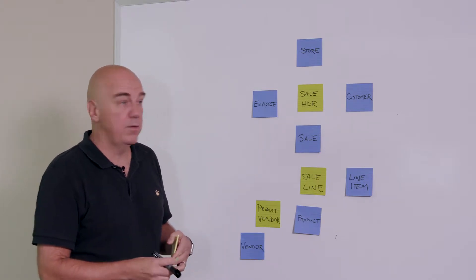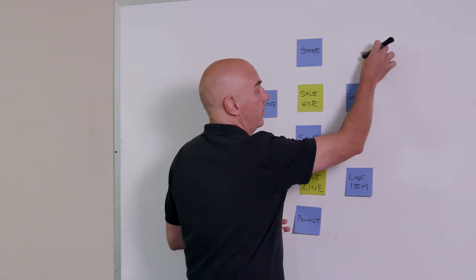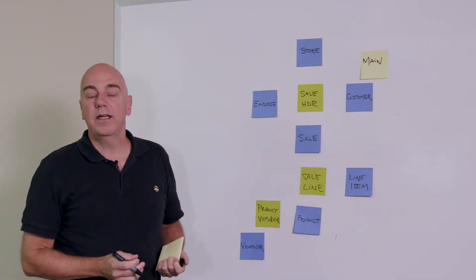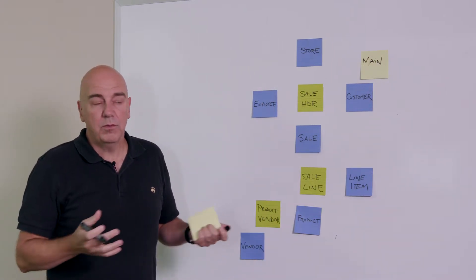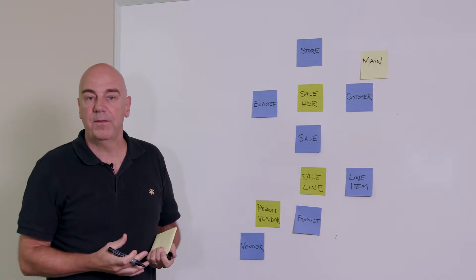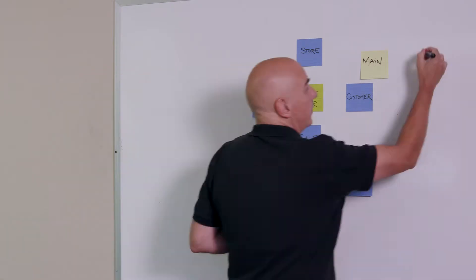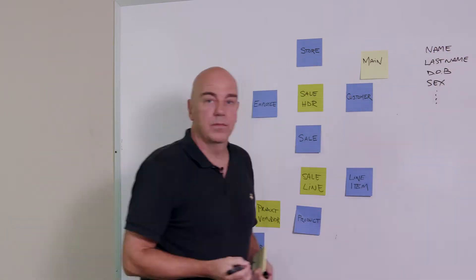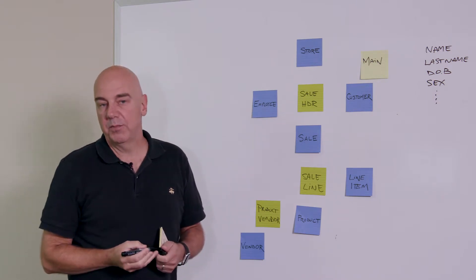One of the things we can say about customer is, well, some kind of a main satellite. And the main satellite will have things in it that include definitional components about the customer. So for example, it might be name, last name, date of birth, sex, and that type of information.